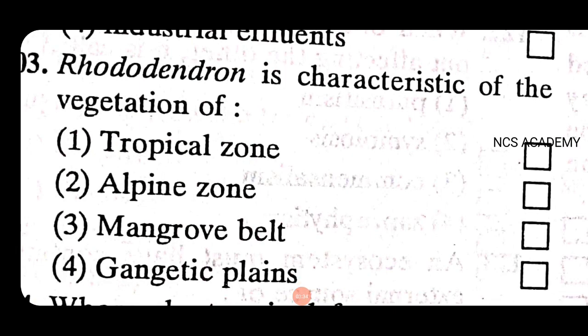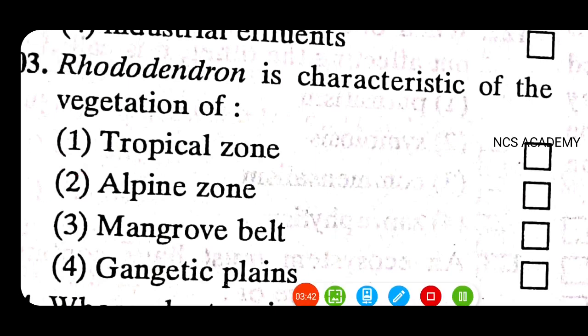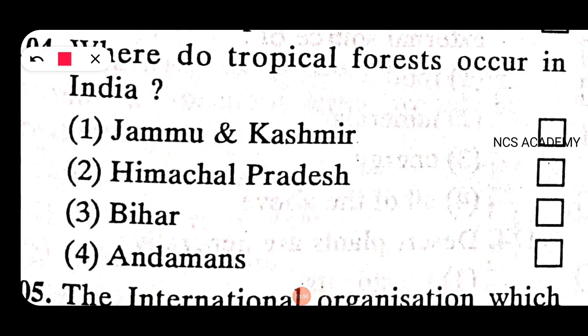Rhododendron is characteristic of the vegetation of the alpine zone — the right answer is alpine zone. Where do tropical forests occur in India? The right answer is Andaman.